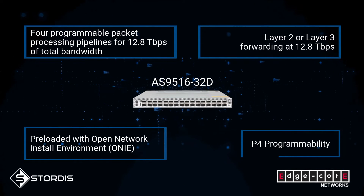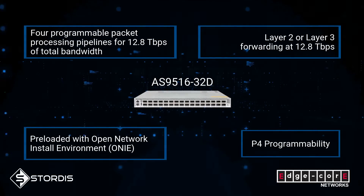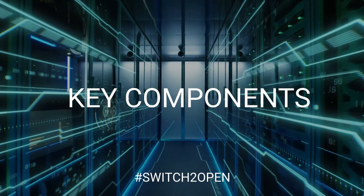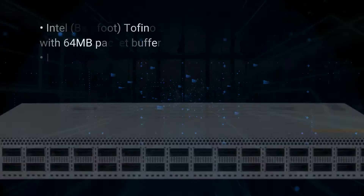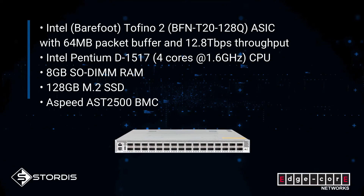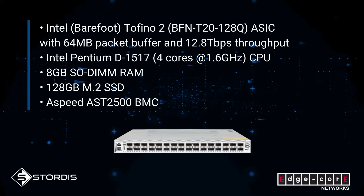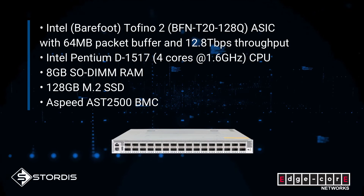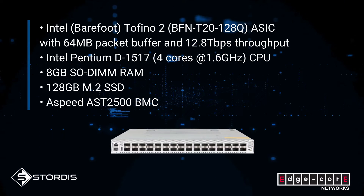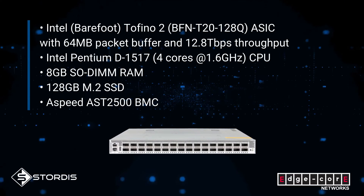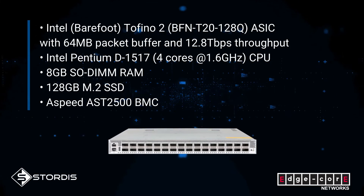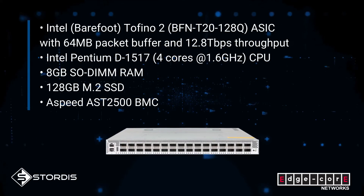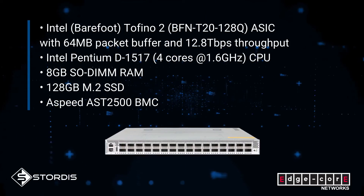P4 programmability. Key Components: Intel Tofino 2 ASIC with 64 Megabyte packet buffer and 12.8 Terabits per second throughput, 4-core Intel Pentium CPU, 8 Gigabytes RAM, 128 Gigabytes storage, and a speed BMC module.